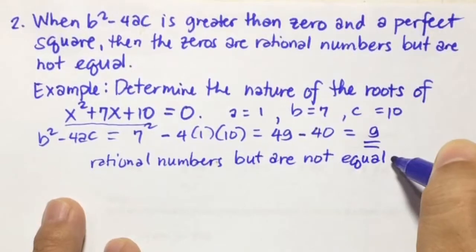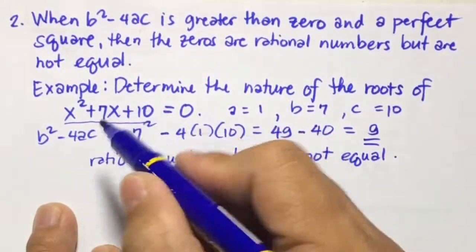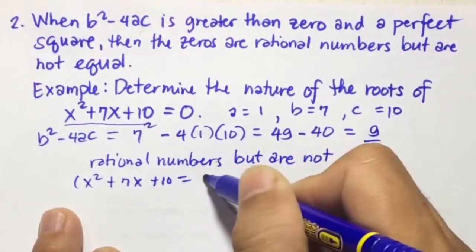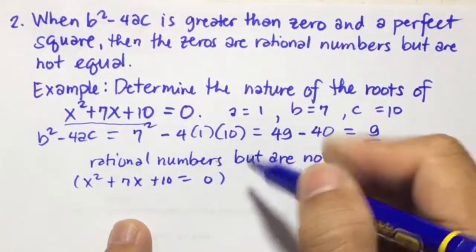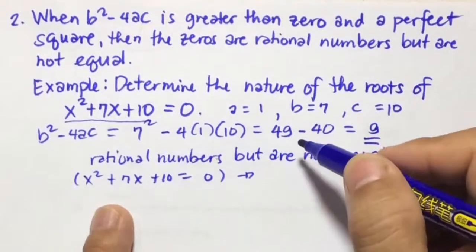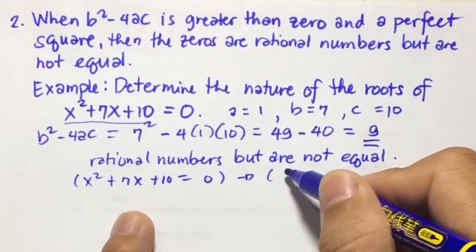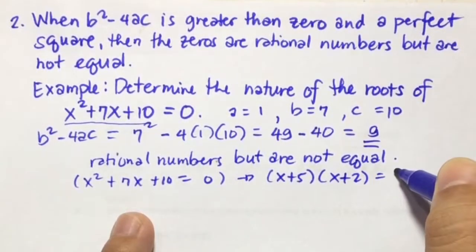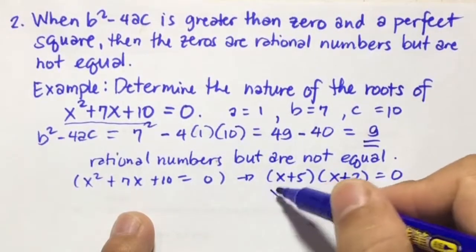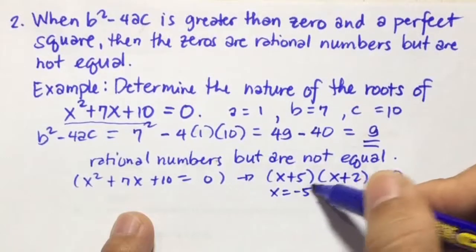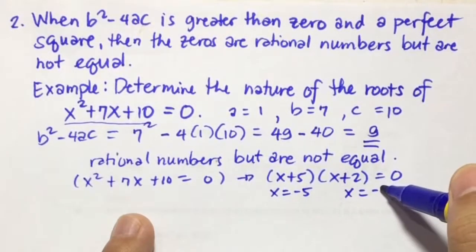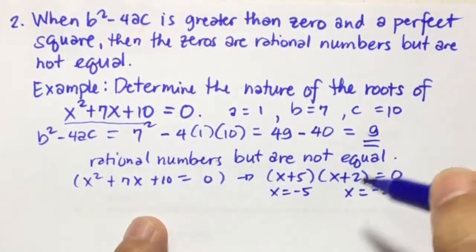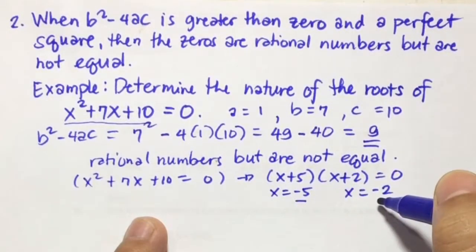We can check this using factoring. X squared plus 7x plus 10 equals 0 factors as x plus 5 times x plus 2 equals 0. Then we get x equals negative 5 and x equals negative 2. So the zeros are rational numbers but are not equal: negative 5 and negative 2.